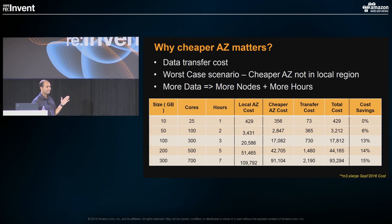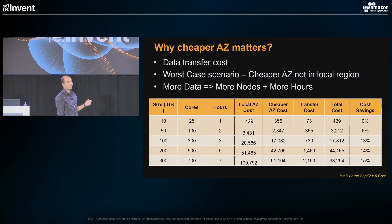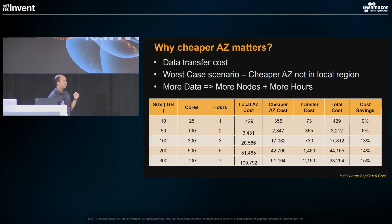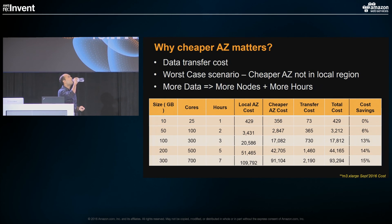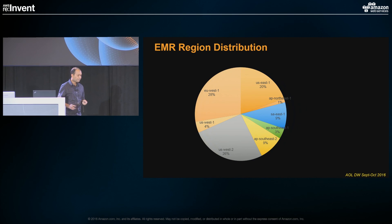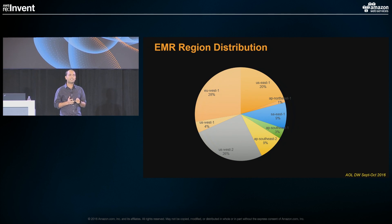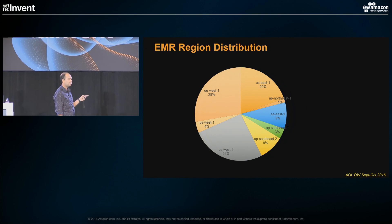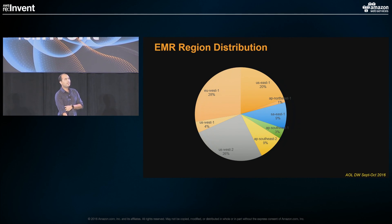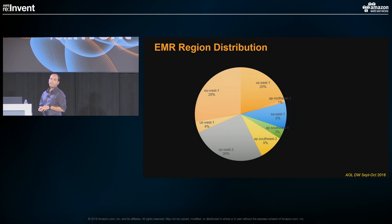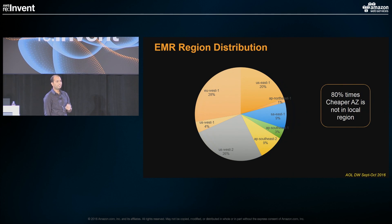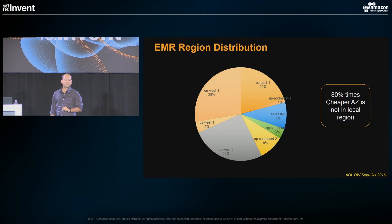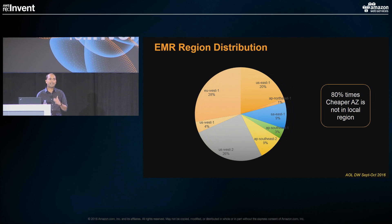At AOL, we process terabytes of data, which is why it's really critical to identify the cheapest AZ. Does it actually happen that your cheapest AZ is not in your local region? This is our actual production distribution for EMR workloads. On average we have a thousand production EMRs per day, so about 30,000 per month. 80% of the time, our EMR was not in the Virginia region — in fact, 28% of the time it was in Europe. I highly recommend identifying that logic if you're serious about spot savings.